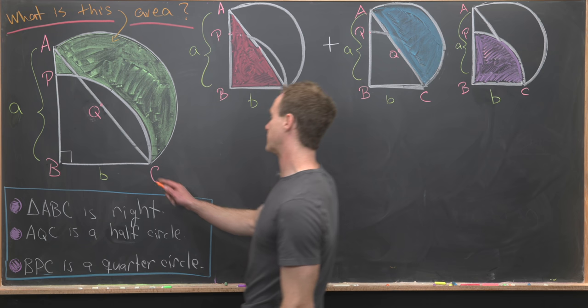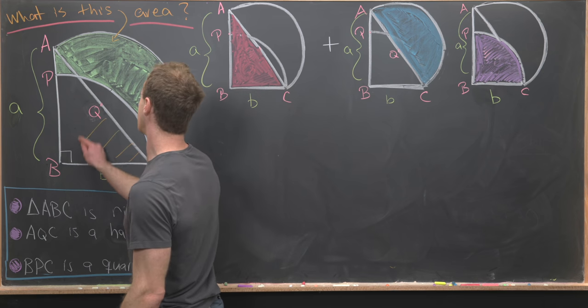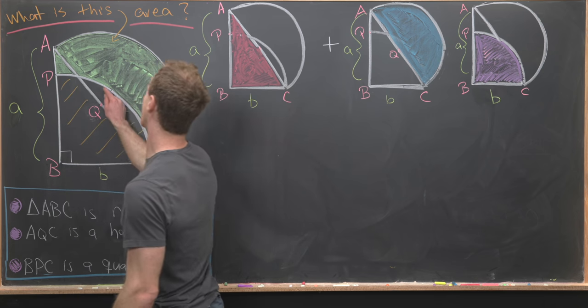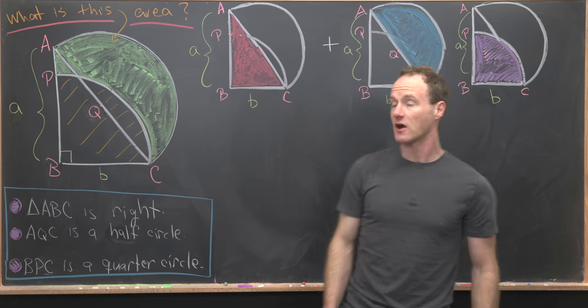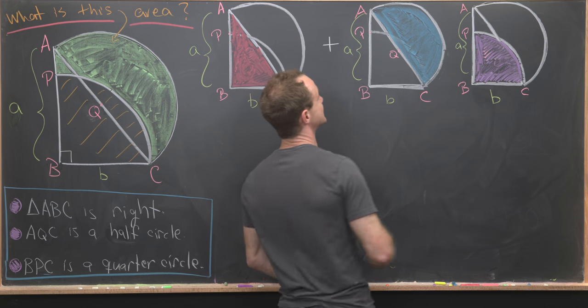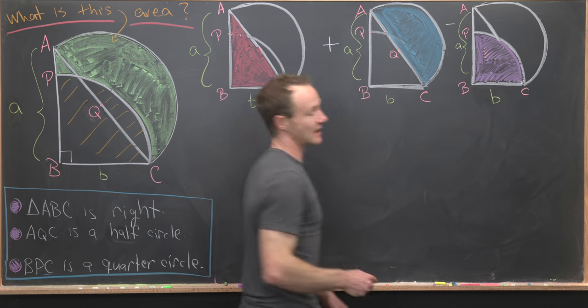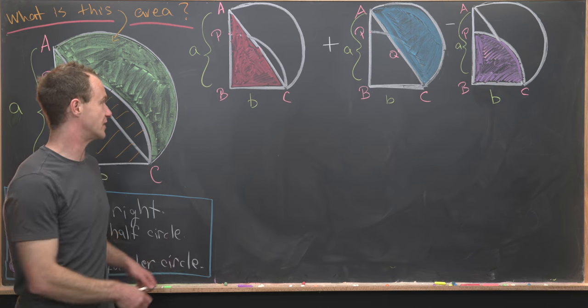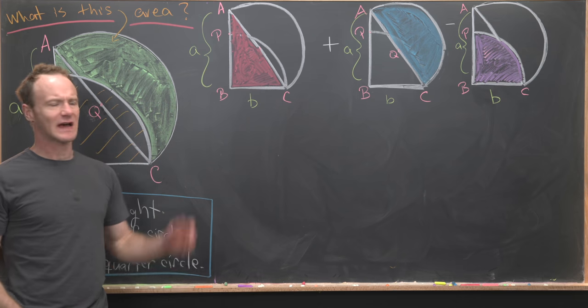But now let's notice between these two figures we've counted the area of a region that we don't need. In fact, we've counted the area of this bit right here which I'll lightly shade in orange. But look, that's the area of something that we already have on the board, so we can just subtract the area of this purple region.